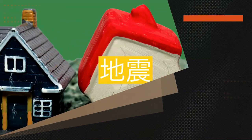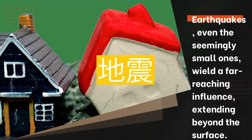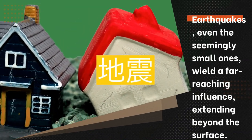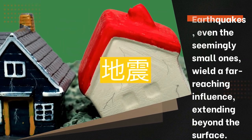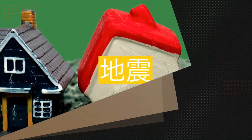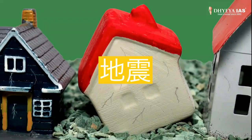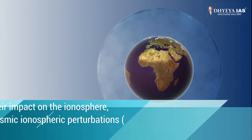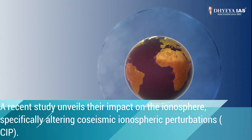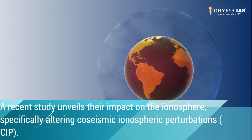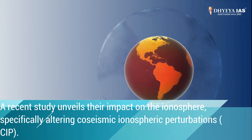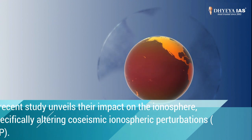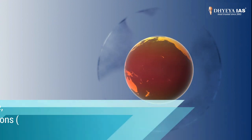Earthquakes, even the seemingly small ones, wield a far-reaching influence extending beyond the surface. A recent study unveils their impact on the ionosphere, specifically altering coseismic ionospheric perturbations, or CIP.